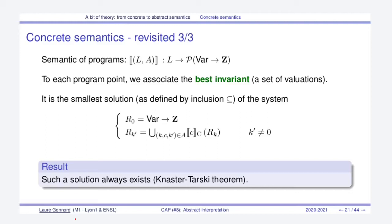Now that we have the semantics of commands, we can define the whole semantics of the program. The program is depicted by a control flow graph labeled by L control points, and A is a set of transitions. We assume there is a unique initial control point, which is always zero. The semantics of the program is defined as a map from all control points to a set of valuations obtainable by running the program. We denote by R0 the best invariant at control point zero and R_k the best invariant at control point k.